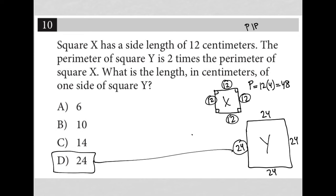And therefore, the perimeter of Y should be 96, because it's 48 times 2.